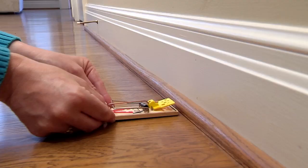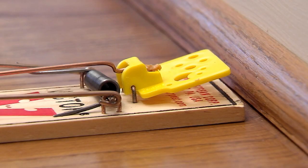Place the trap where you've seen signs of rodent activity or along the wall where rodents primarily travel. The end of the trap where the yellow petal is baited should be placed flush against the wall.